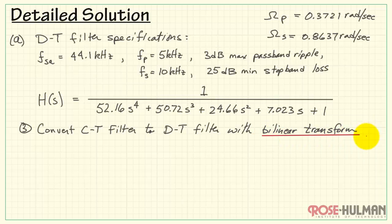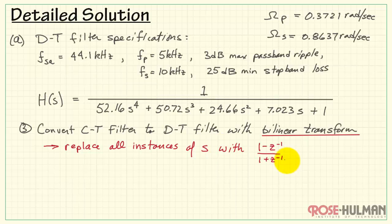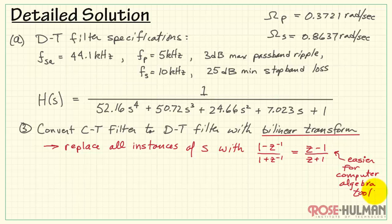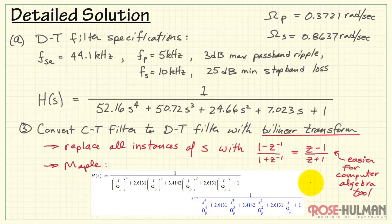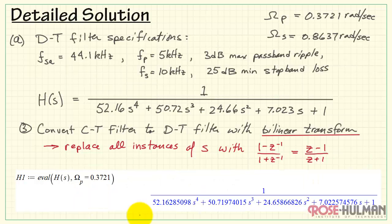Our third step is to convert the continuous-time filter to the discrete-time form with the Bilinear Transform. This means replacing all instances of S with 1 minus Z-inverse divided by 1 plus Z-inverse — or equivalently Z minus 1 divided by Z plus 1, which is easier in a computer algebra tool. Here I'm using Maple. I'll key in the H(S) found earlier — the blue printout is the result of each Maple calculation step. I'll then evaluate H(S) at that specific frequency to confirm agreement with the earlier calculations.